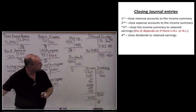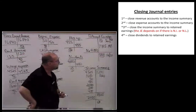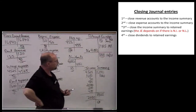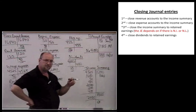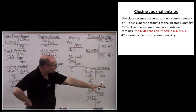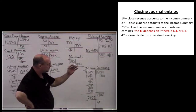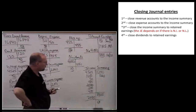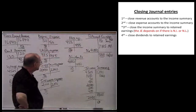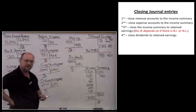Here are the entries in journal entry form. Entry one: debit fees earned and rent revenue, credit income summary. Entry two: debit income summary for all expenses in total, credit all the individual expense accounts. Entry three: debit income summary, credit retained earnings — that's the transfer of net income. Entry four: debit retained earnings, credit dividends to close out the dividend account.